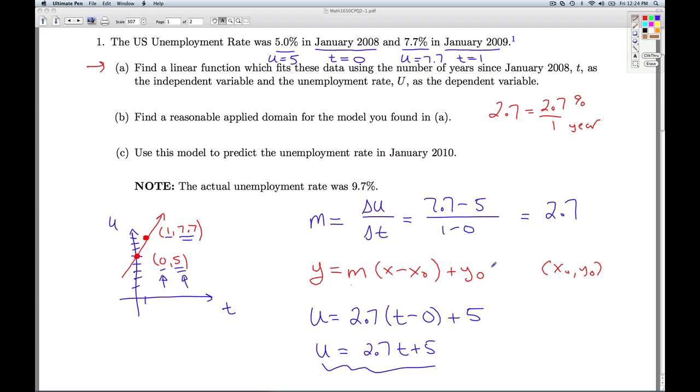Now, those of you that are fans of the slope-intercept formula will notice that this gives you the slope-intercept right away. You could identify quickly this would be the b in the slope-intercept form. So, no matter how you slice it, this is our linear model. If I want to use function notation, we would write u of t is 2.7t plus 5. So, that'll do it for part a.